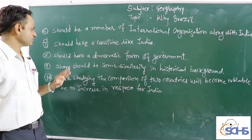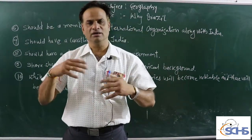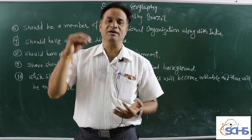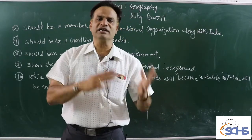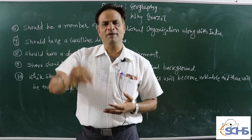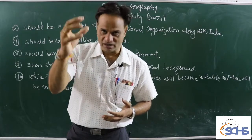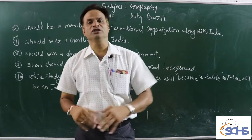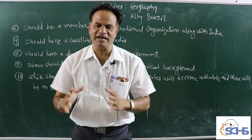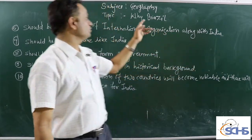Point number 8: the country should have a democratic form of government. We want a country in another hemisphere and another continent that also has a democratic system of government. The same administrative and democratic condition exists in both Brazil and India. That is why this is a main reason we are going to select Brazil.